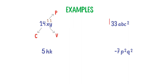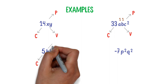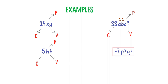33ABC squared is also an algebraic term because 33 is the constant, A, B, C are variables, the power of A is 1, that of B is also 1, and that of C is 2. 5HK is also an algebraic term because 5 is constant, H and K are variables, and the power of H and K is 1. Minus 7P squared Q squared is an algebraic term because minus 7 is the constant, P and Q are variables, and the power of P and Q is 2. Thus these all are algebraic terms.